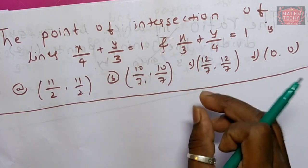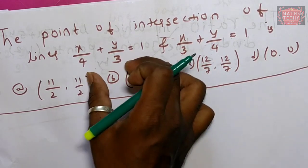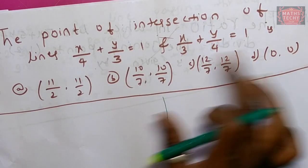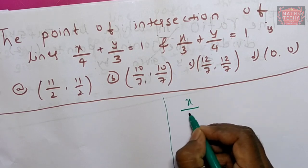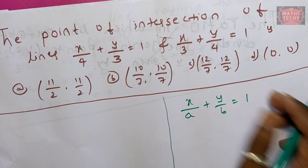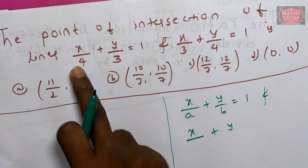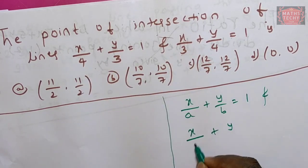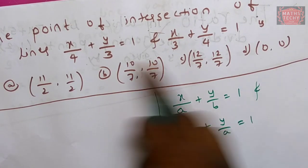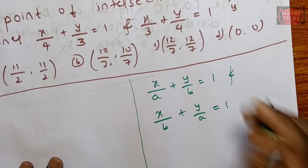So let us find it. This is the shortest form of line — it is the intercept form of line. We need x/a plus y/b equal to one. For the other line, the point of intersection — let's find it.